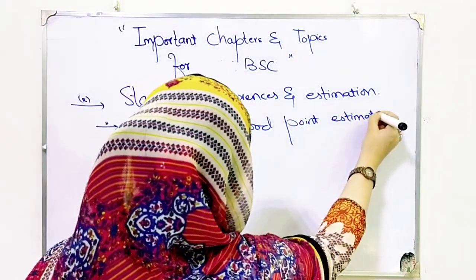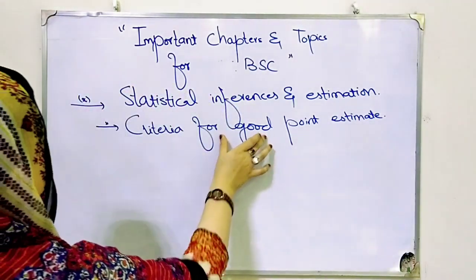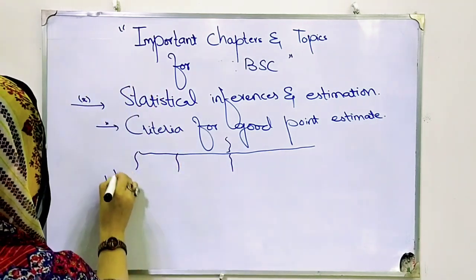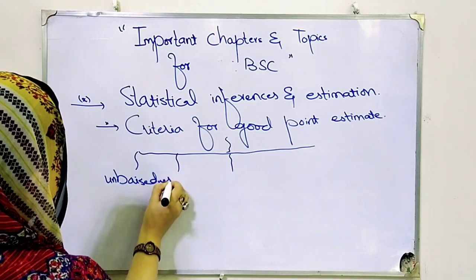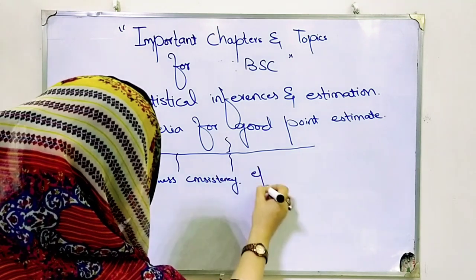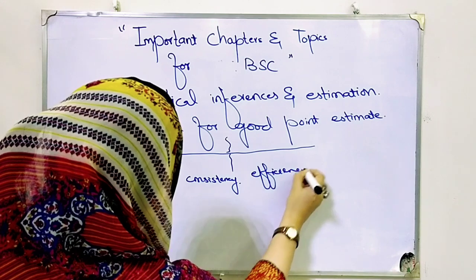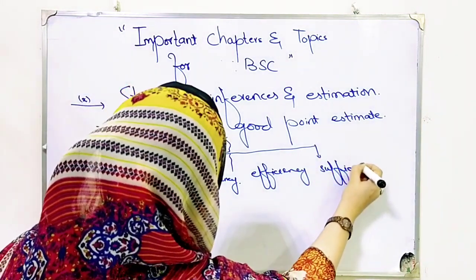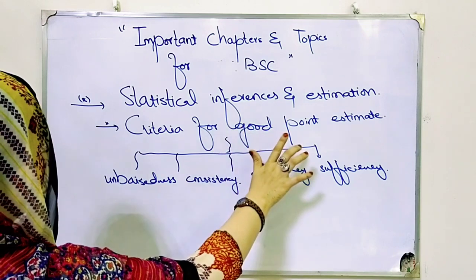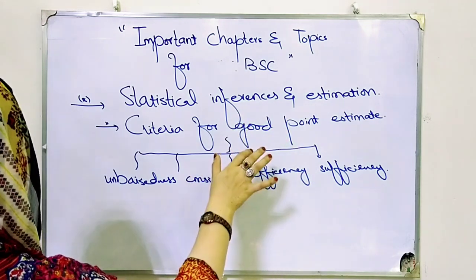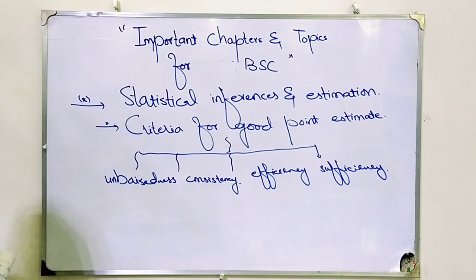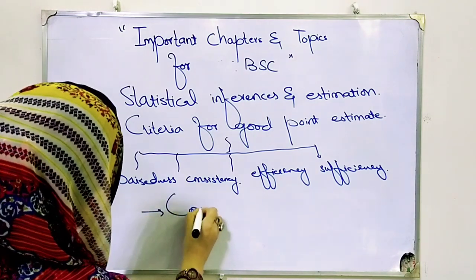In this chapter there are four criteria that are most important. The four criteria are: unbiasedness, consistency, efficiency, and sufficiency. You have to prepare these four criteria well. The majority of questions ask about criteria for the good point estimator — you may be asked the full criteria including unbiasedness, consistency, and sufficiency. Also, the confidence interval question is very important — prepare it well.